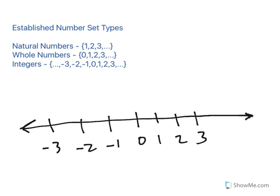And then we have integers, which are zero, negative one, negative two, negative three. And they're basically all whole numbers, but can also be assigned a negative value.